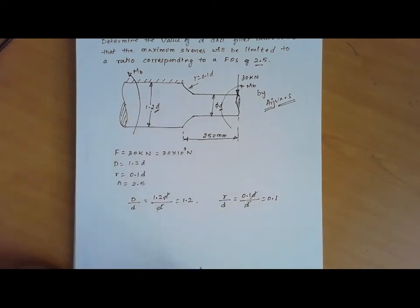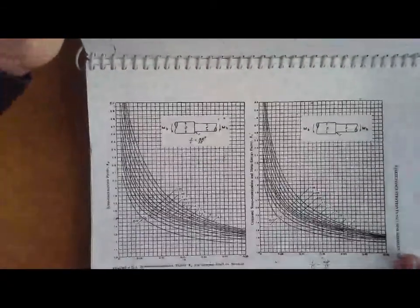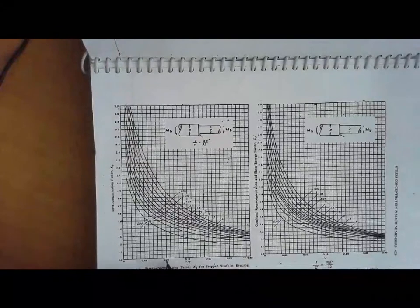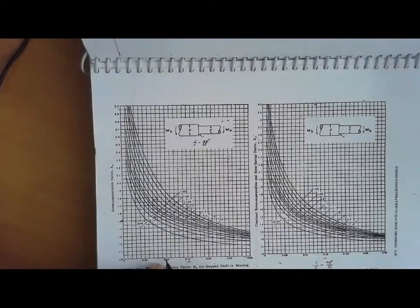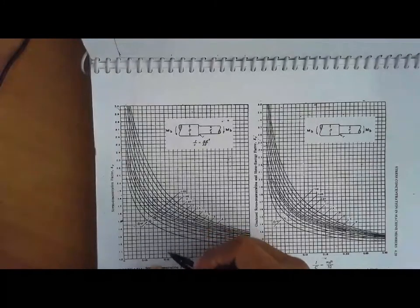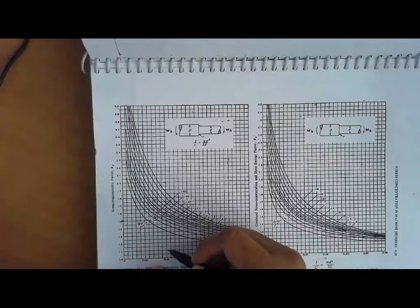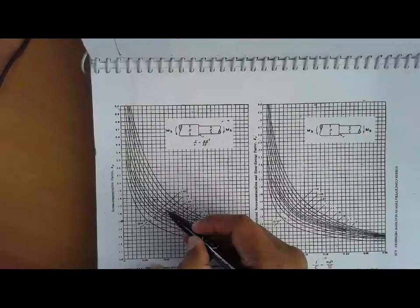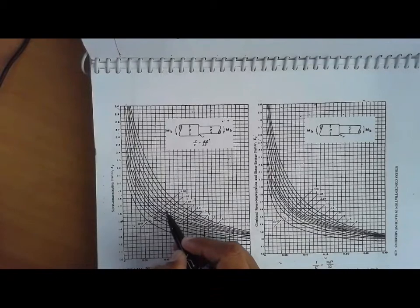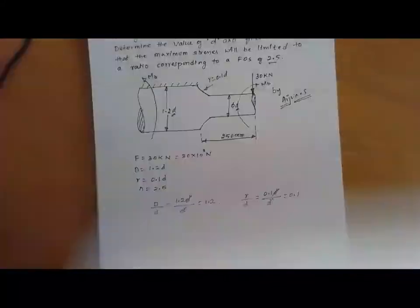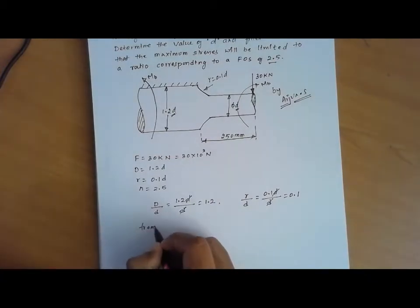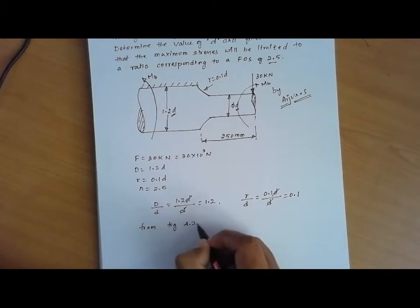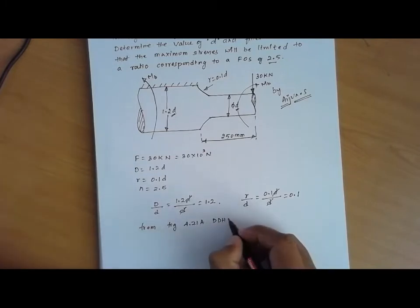We need to find the stress concentration factor Kσ. Going to figure 4.21A from the design data handbook, for R/d = 0.1 and D/d = 1.2, we read off the value. At R/d = 0.1 and D/d = 1.2, the value from figure 4.21A of the design data handbook gives Kσ = 1.62.